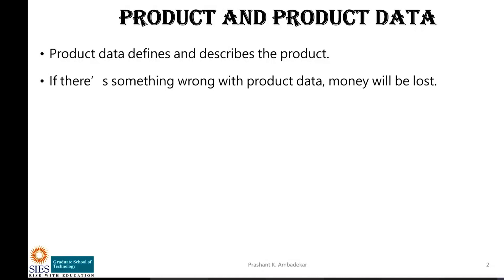Consider a simple example of making tea. Someone follows ingredients from YouTube and instead of putting sugar, puts salt — the product will not be usable. Similarly in manufacturing, if drilling is specified but boring is performed, that product may not fit in a sub-assembly. Surface finish and finish are two different things. Even in electronics, if an IC is replaced by a wrong one, or in code if something is missing, it may lead to something completely different.